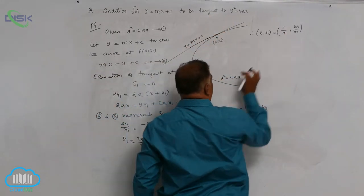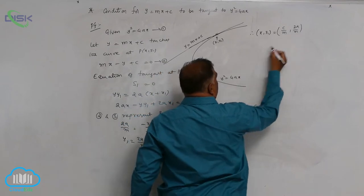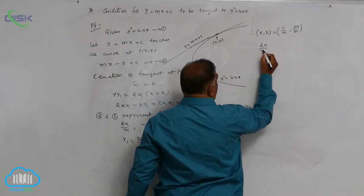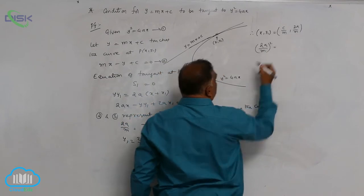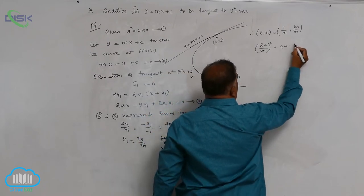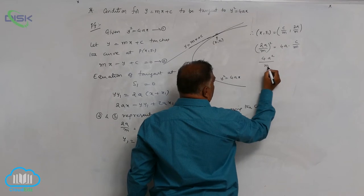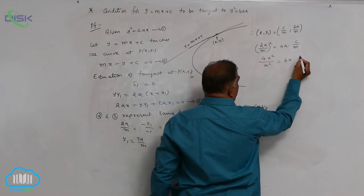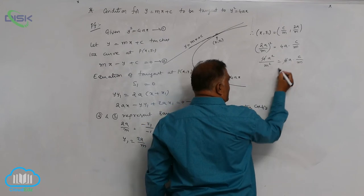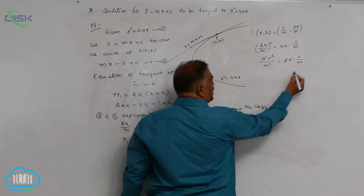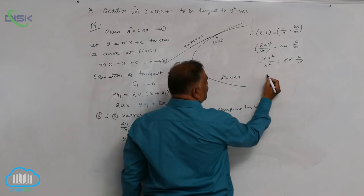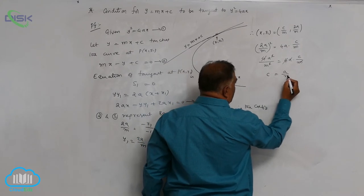Substitute this point on the parabola. In place of y, (2a/m)² = 4a(c/m). So 4a²/m² = 4ac/m. Four cancels, one a cancels, one m cancels, leaving c = a/m.